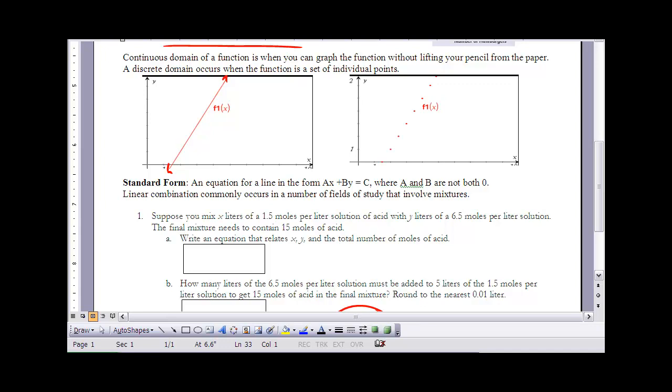The other type of domain for a function is a discrete domain. In a discrete domain, instead of having a continuous where I can just graph a line or a curve without pulling my pencil off the paper, I'm actually graphing individual points in a discrete domain. In a discrete domain, we can actually count up the number of ordered pairs that would satisfy that particular function.